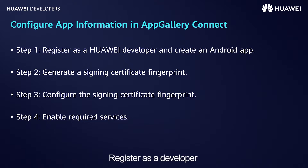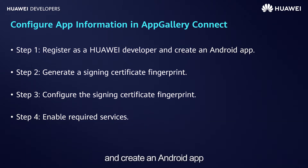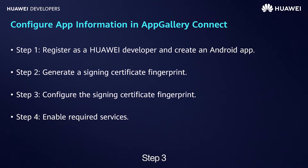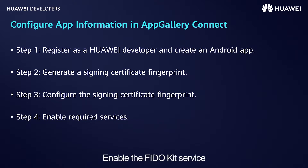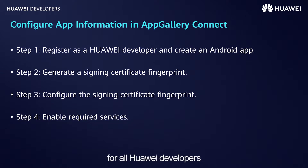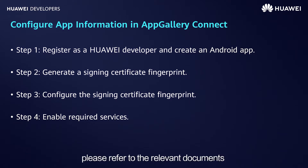Step 1: Register as a developer on the Huawei Developer website and create an Android app. Step 2: Generate a signing certificate fingerprint for the Android app. Step 3: Configure the signing certificate fingerprint in AppGallery Connect. Step 4: Enable the FiddleKit service. The first two steps are standard practice for all Huawei developers and will not be introduced here. For details, please refer to the relevant documents in the Huawei Basic Service Document Center.